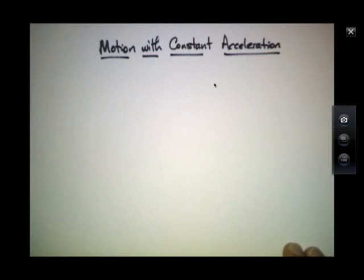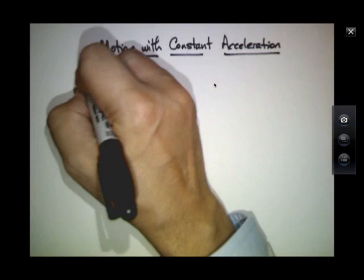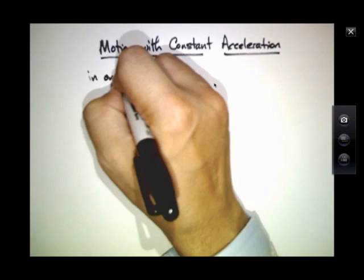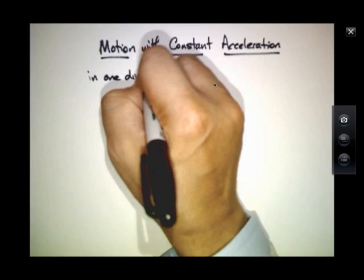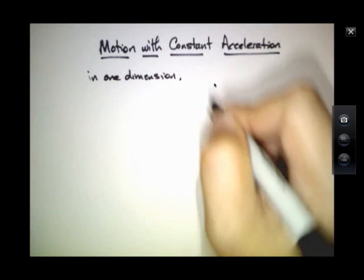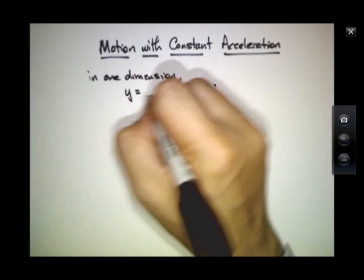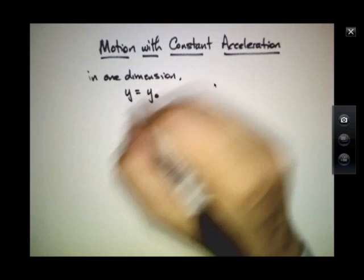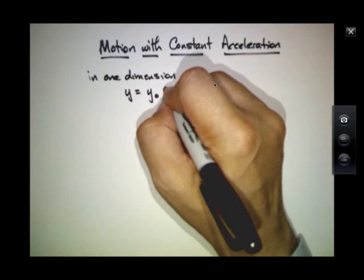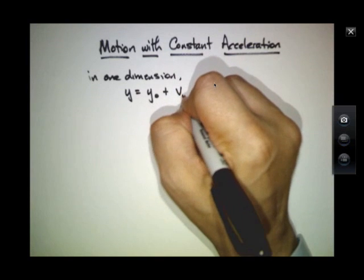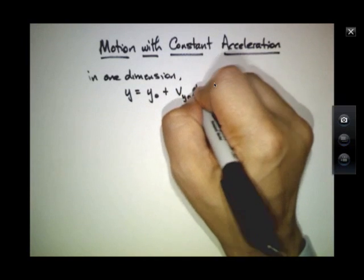We're going to revisit a case that was familiar in one dimension, one in which we have acceleration, but it's constant. In one dimension, the equations of motion were that the position y would equal some initial value plus an initial velocity times time,